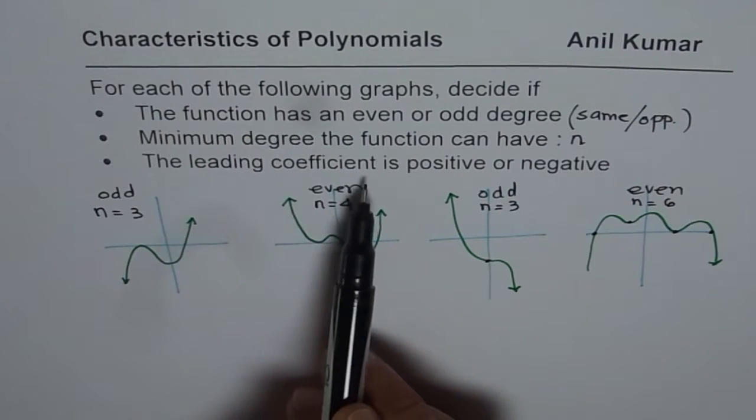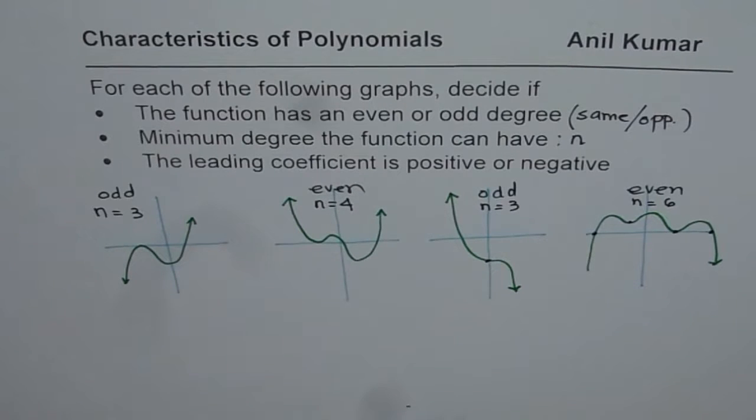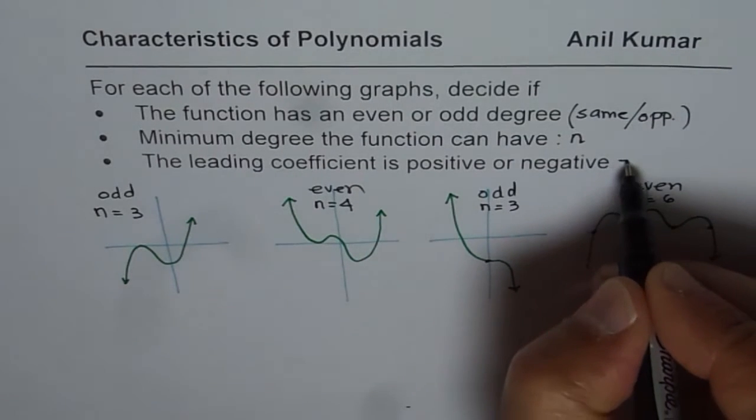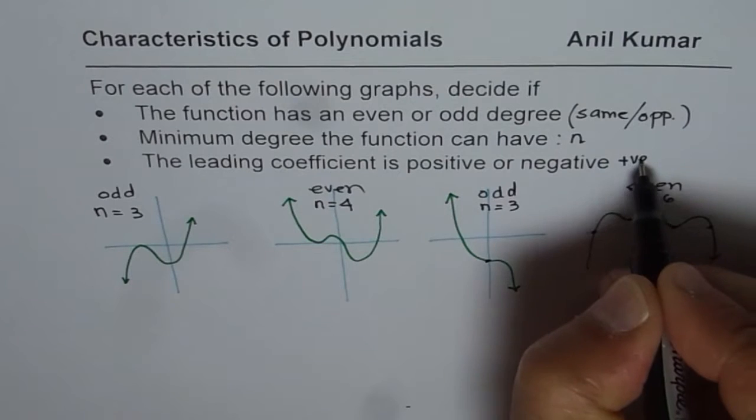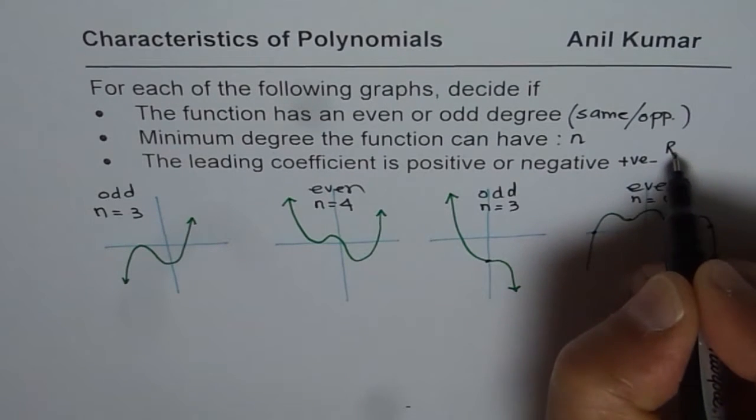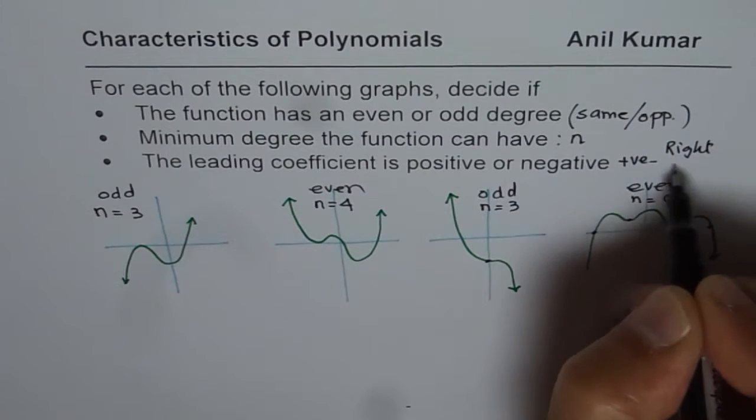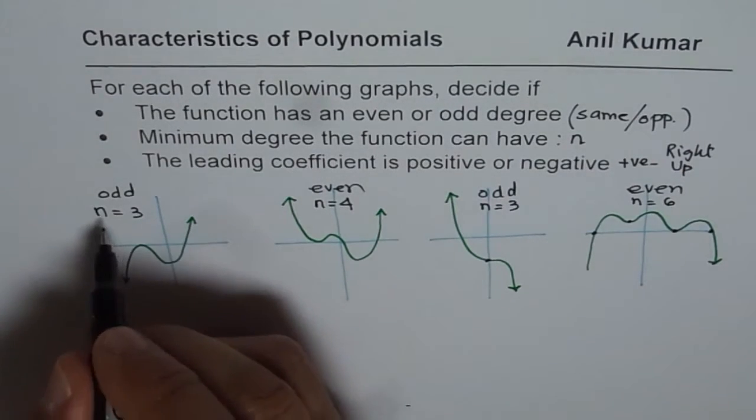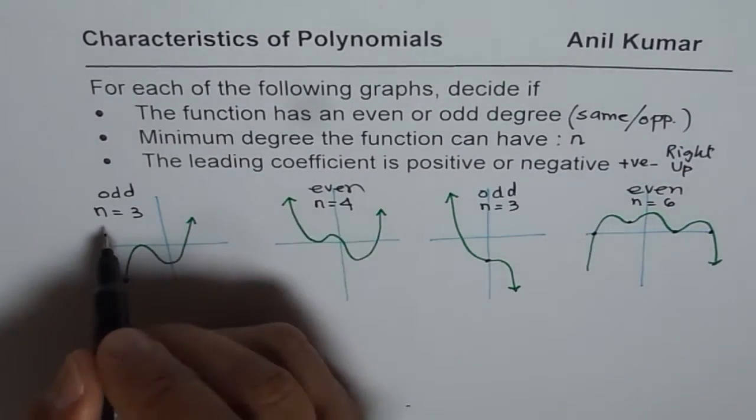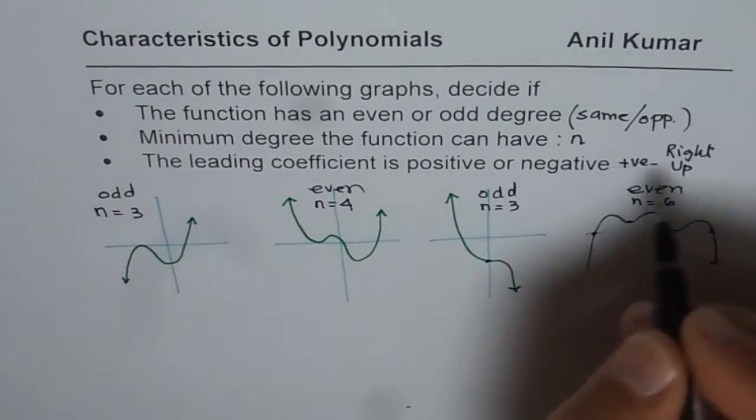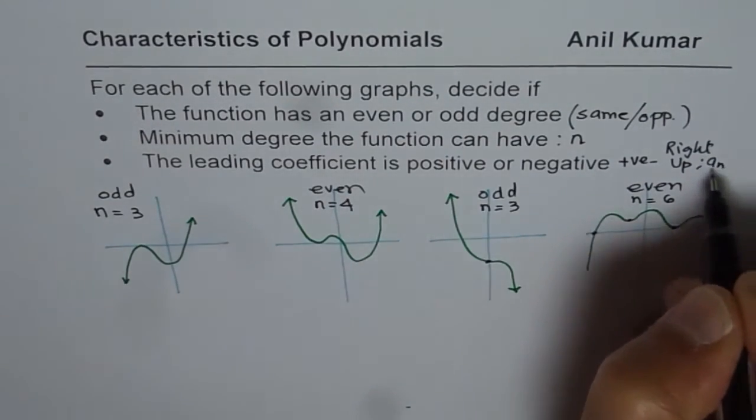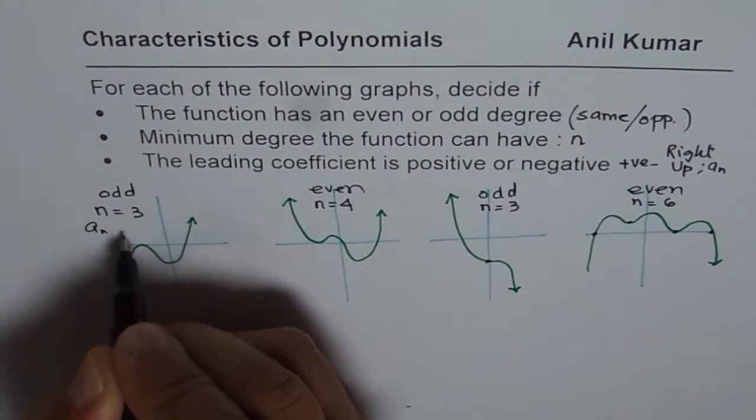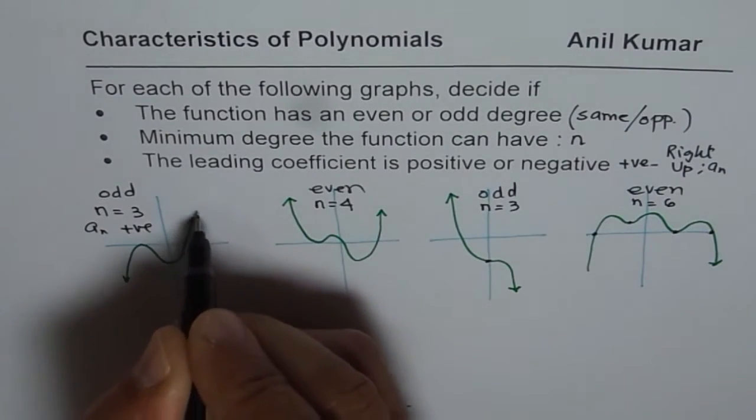Now, we will talk about leading coefficient is positive or negative. So, if it is positive, leading coefficient is positive, then you see right side up. Now, in this case, right up, then the leading coefficient, we will write leading coefficient as a_n. So, we are writing a_n is positive, since right side is up.